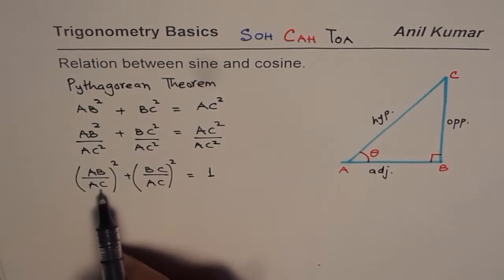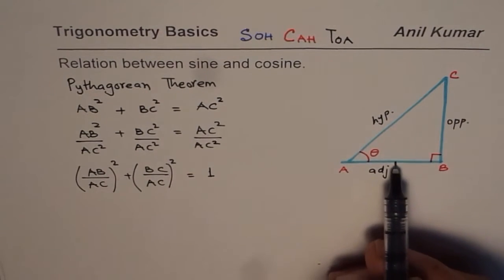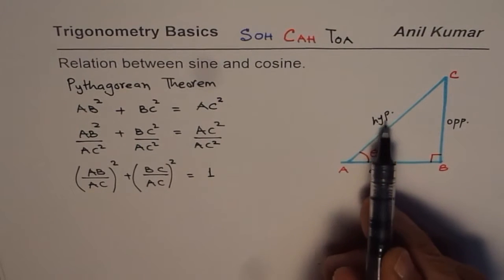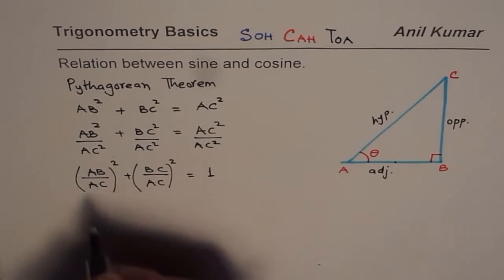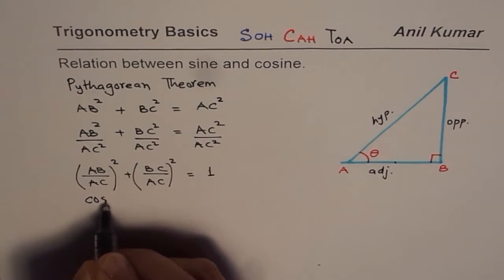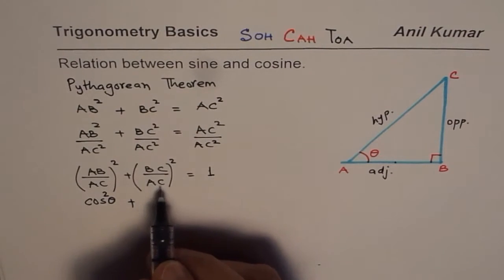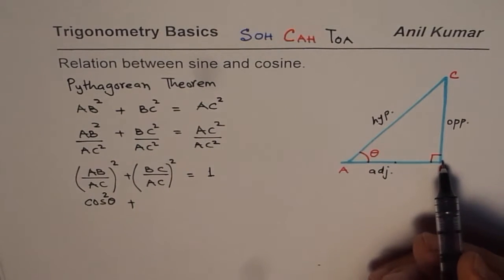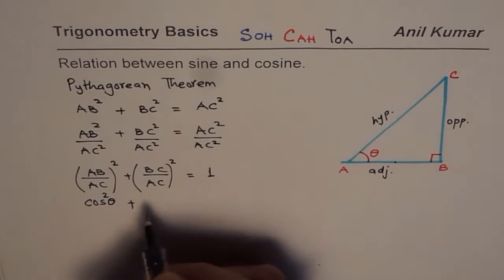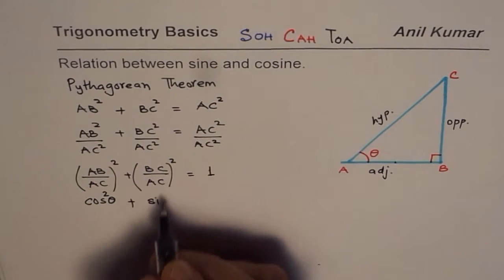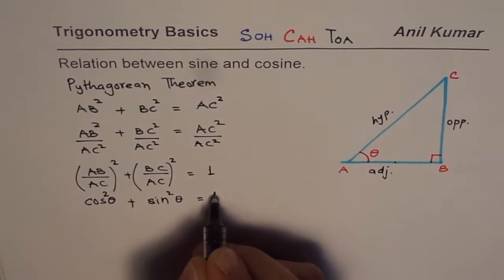Now we have AB over AC. AB over AC is adjacent over hypotenuse. So I could write this as cos θ, square of that normally written as cos²θ plus BC over AC. BC is the opposite side. Opposite over hypotenuse is sine. Square of sine theta, sin²θ equals 1.